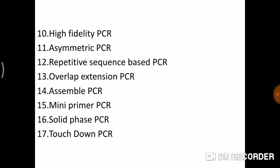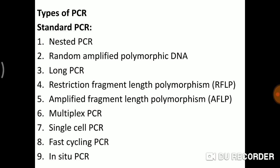There are different types of PCR. We have nested PCR, Random Amplified Polymorphic DNA (RAPD), long PCR, and RFLP — Restriction Fragment Length Polymorphism. RFLP is a difference in homologous DNA sequences that can be detected by the presence of fragments of different length after digestion of the DNA sample with specific restriction enzymes. Different restriction fragments of different lengths can be detected using the RFLP technique.